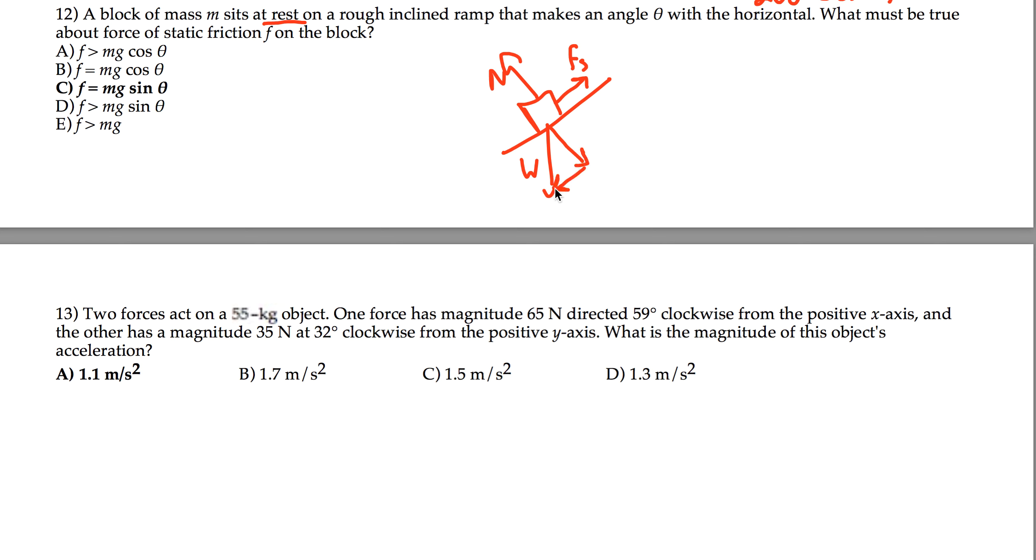Since we're at rest, that means that we're in equilibrium. The sum of the forces in the x equals zero. That's what we care about, the x-direction, because we're looking for friction. So the friction force must balance the x-component of the weight. So we can say friction minus wx is zero, or friction equals wx.